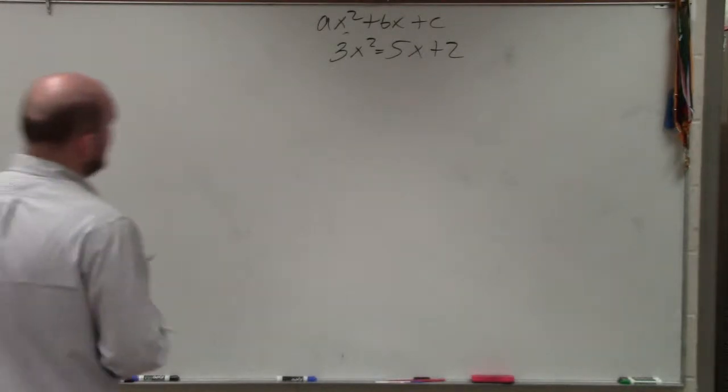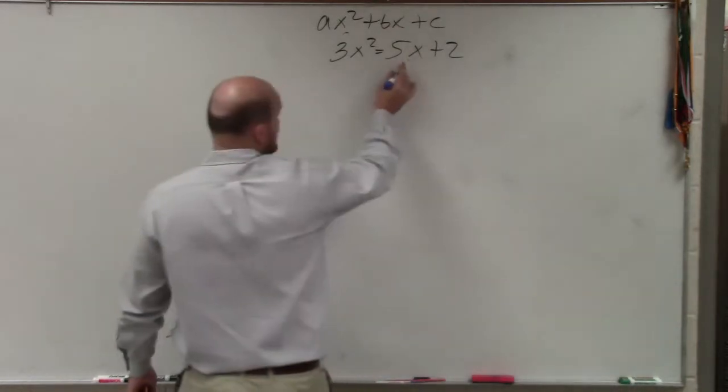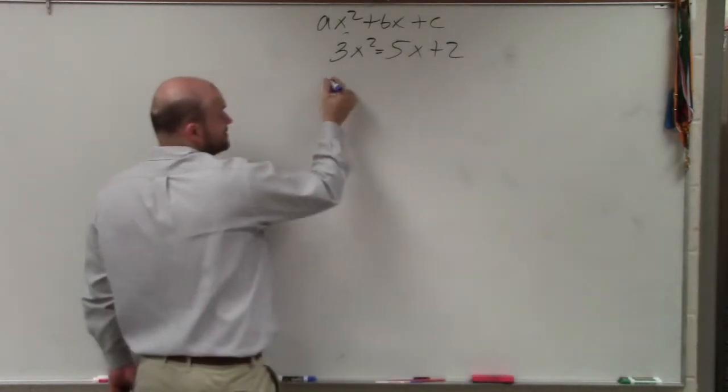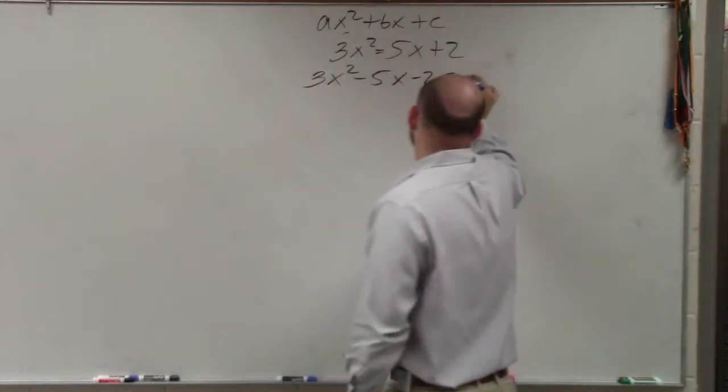So the first thing that we're going to do in this case is we're going to go ahead and set this equal to 0. So you subtract the 5x on both sides, subtract the 2 on both sides. 3x squared minus 5x minus 2 equals 0.